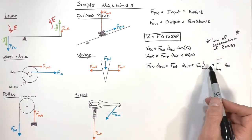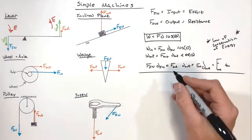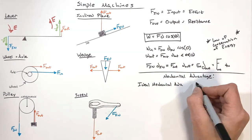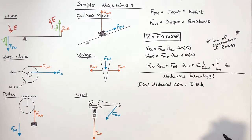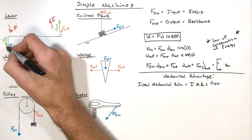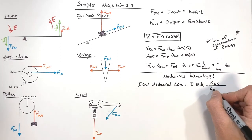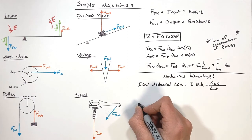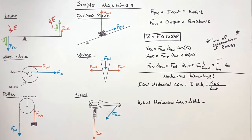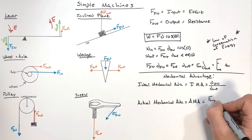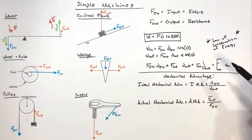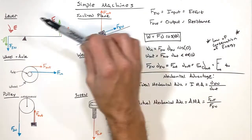This transfer of energy from in to out leads us to something called mechanical advantage. There are two types. We have ideal mechanical advantage, often referred to as IMA, which is defined as the input distance over the output distance. Then we have actual mechanical advantage, referred to as AMA, which is mathematically defined as F-out over F-in. One is based entirely on displacement, the other on forces.